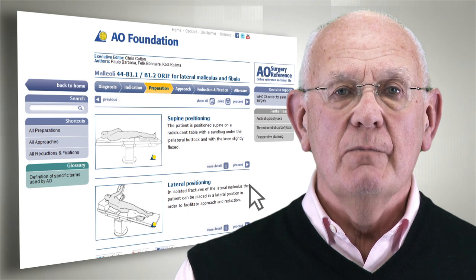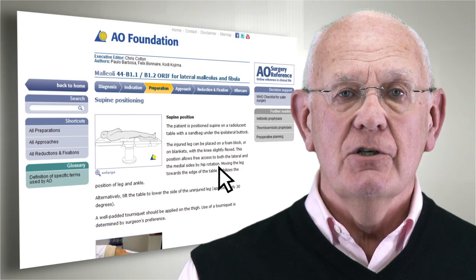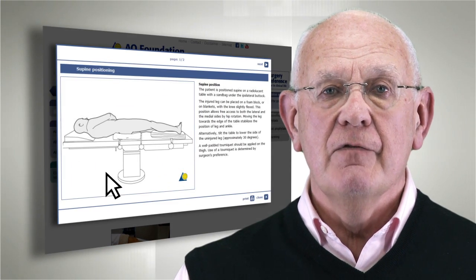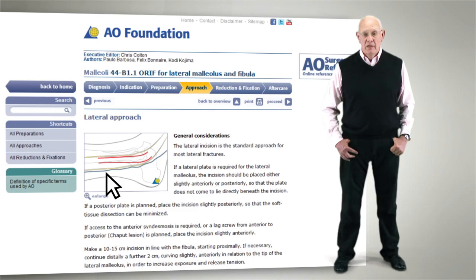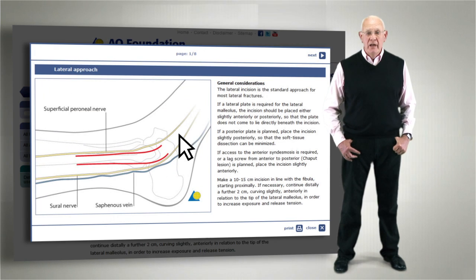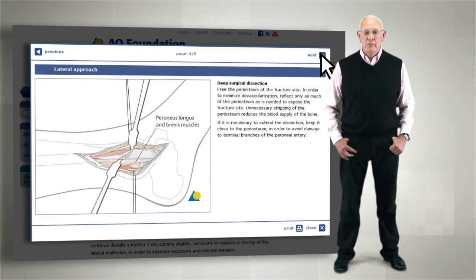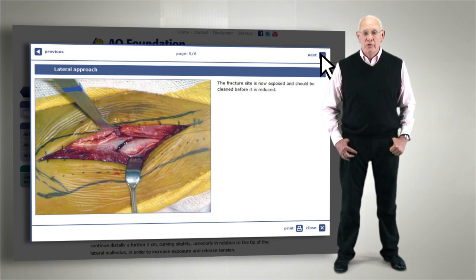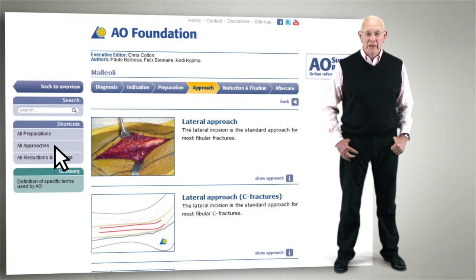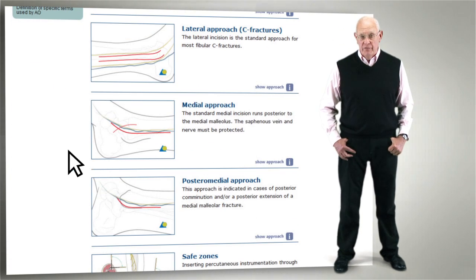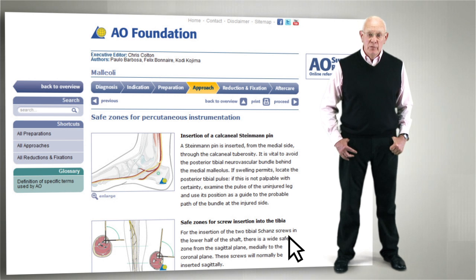Once your treatment decision has been made, you can then follow the surgical process starting with information on patient positioning. As a next step, any relevant approaches that are associated with your chosen treatment are shown in detail. You can also select an overview of all approaches offered for this module and review them all.